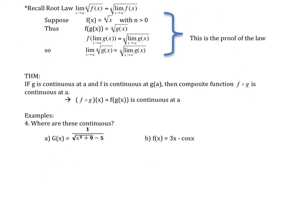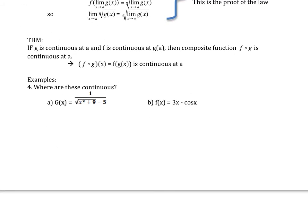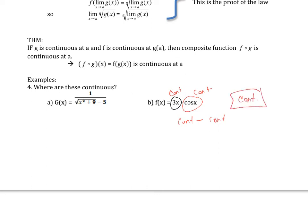I'm going to save two examples for class, but let's do one right now since it's a bit easier. This part is a polynomial — continuous. This is a trig function — continuous. So if I have continuous minus continuous, one of the laws told me that it will be continuous. And it will be continuous on all real values, because both are continuous on all real values.